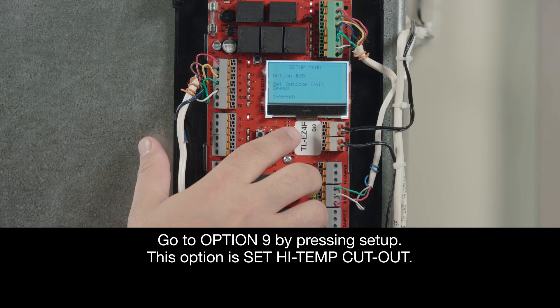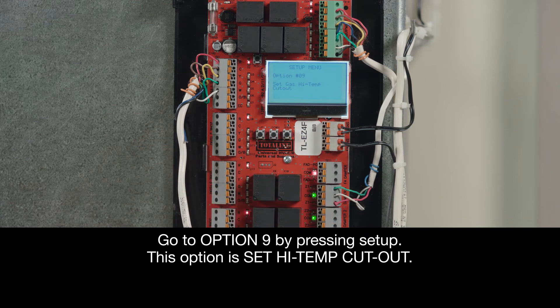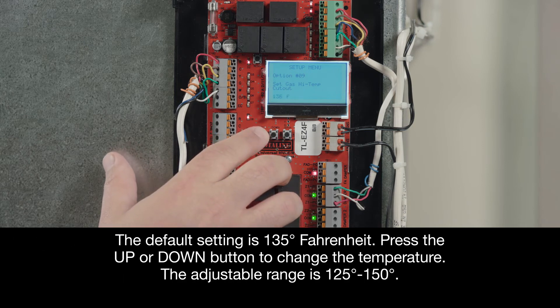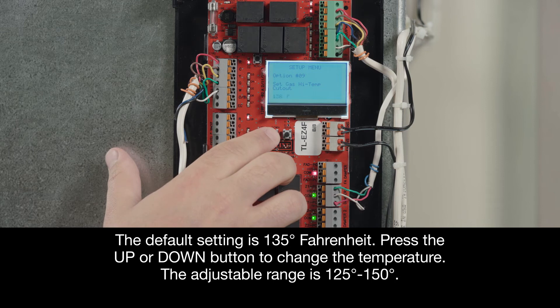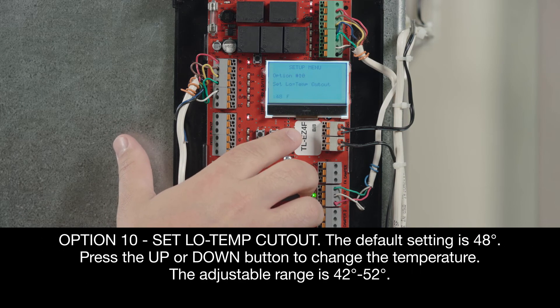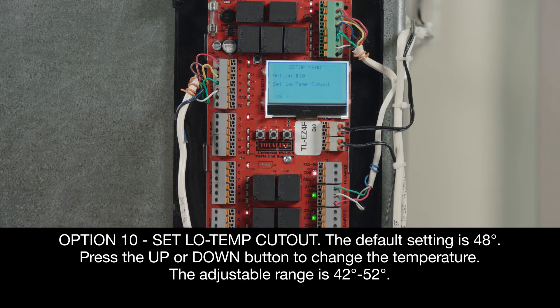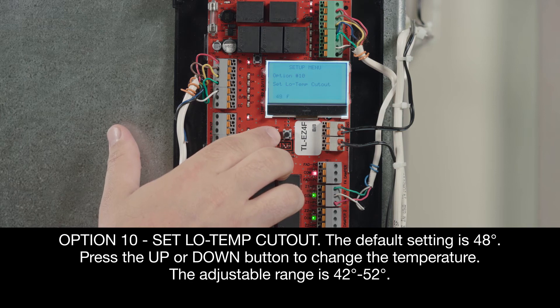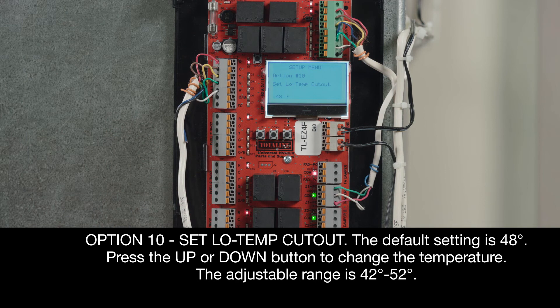Now let's go to Option 9 by pressing Setup. You can see this option is Set High Temp Cutout. The default setting is 135 degrees Fahrenheit. Press the Up or Down button to change the temperature. The adjustable range is 125 to 150 degrees. Next, Option 10, Set Low Temp Cutout. The default setting is 48 degrees. Press the Up or Down button to change the temperature. The adjustable range is 42 to 52 degrees.